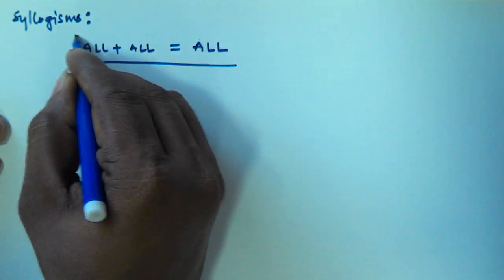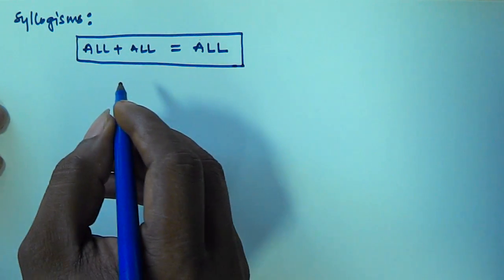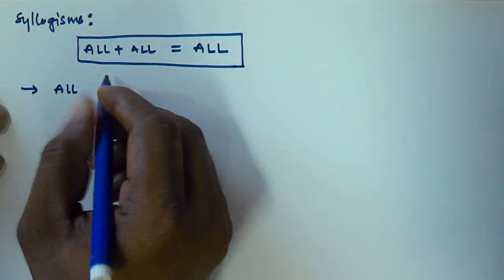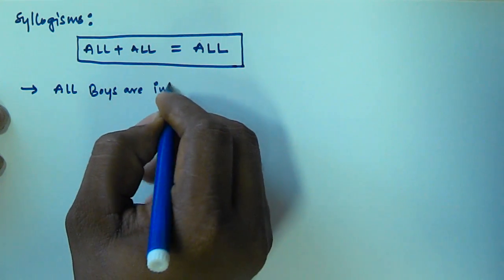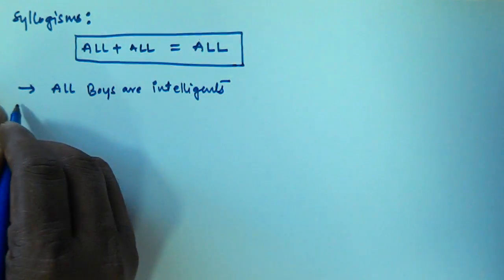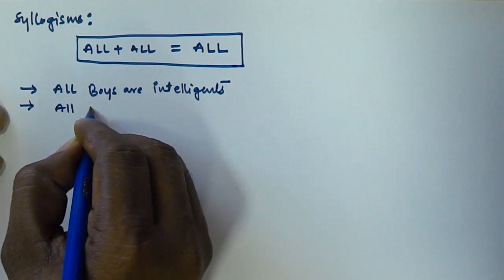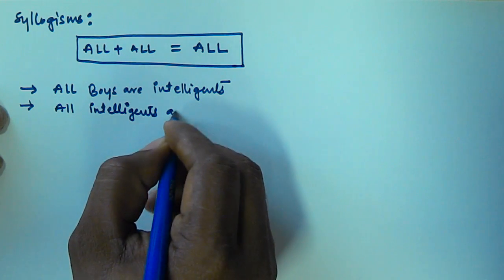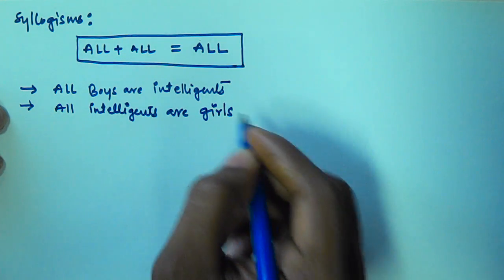Now we will see how we can use this trick in syllogisms. Let us consider two syllogisms are given. The first syllogism is: all boys are intelligent. The second syllogism given is: all intelligents are girls.